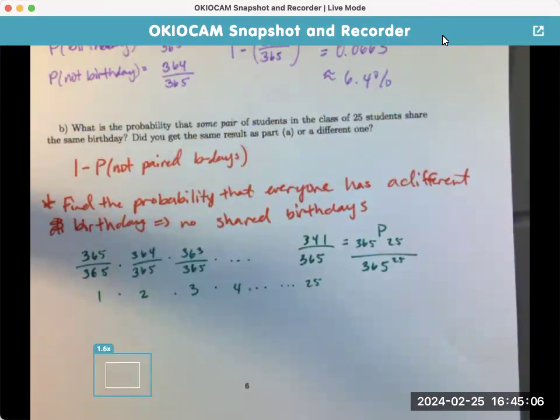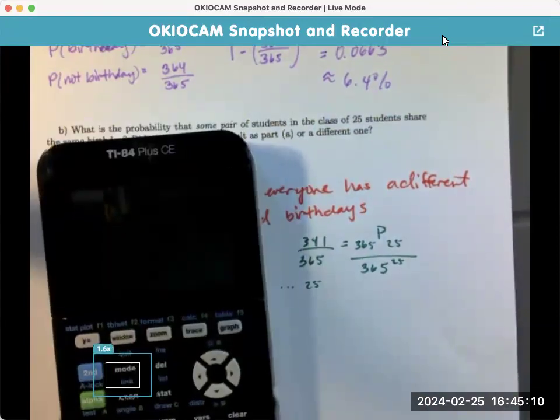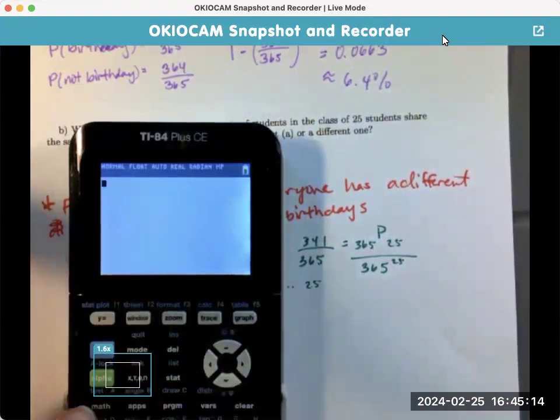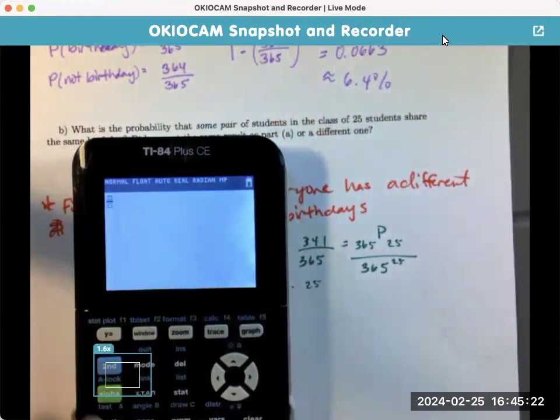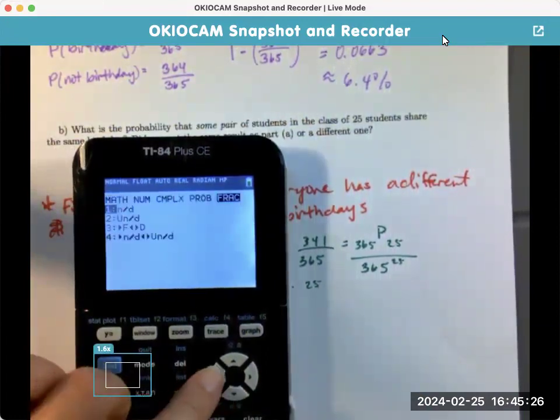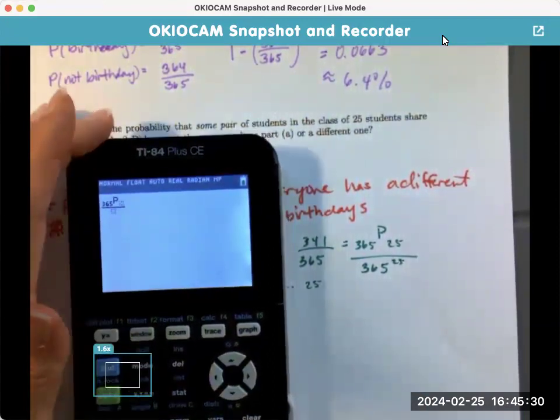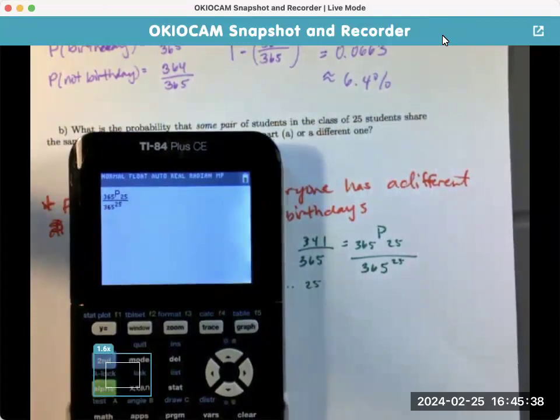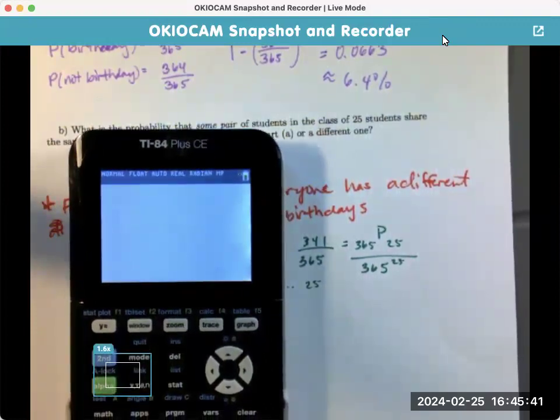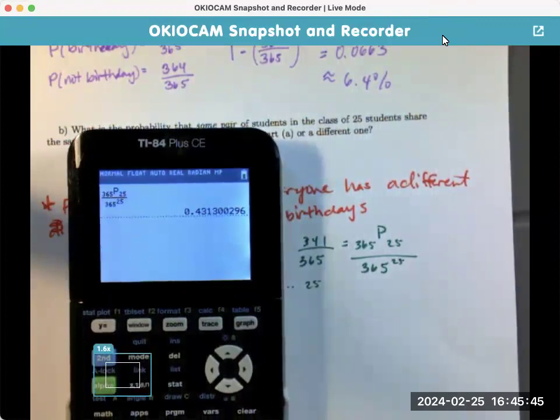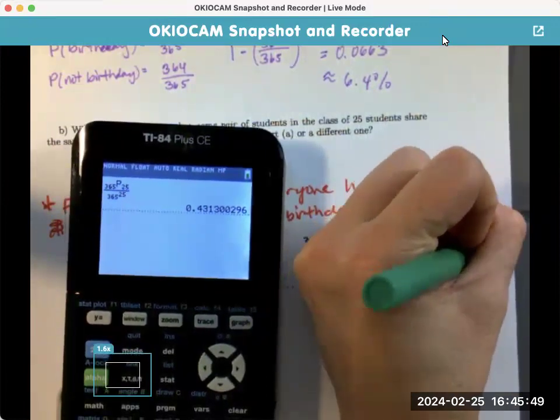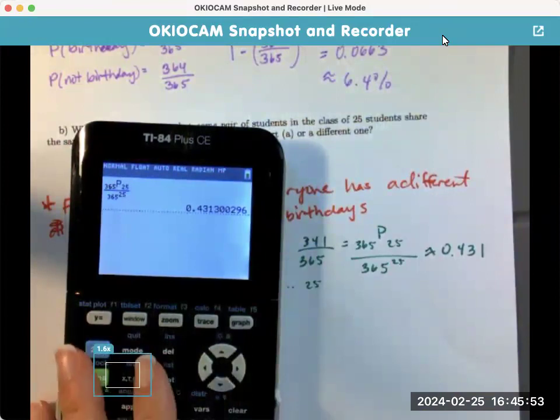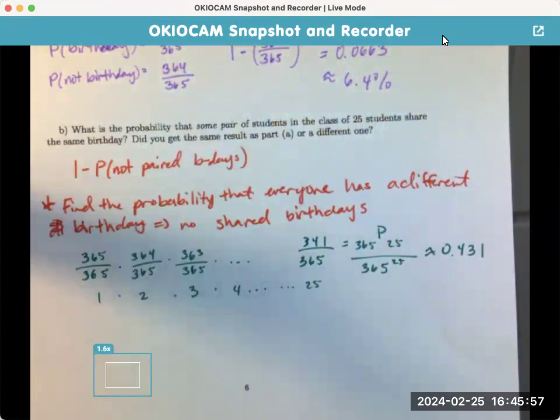So, we can just grab our handy-dandy calculator there. So, let's see. So, I'm going to go math, fraction, not cheap, but just so you have a better visual, of 365 times math, probability, NPR, because order matters, right? The birthday order matters. So, choose 25 over 365, raised to the 25th, there we go, which is approximately 0.431, or 43.1%, but remember, this is no shared birthday. Right? This is no shared birthday, right?